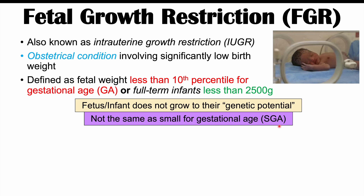Fetal growth restriction is not the same as small for gestational age. In FGR, the fetus or infant is not meeting their genetic growth potential — there is some underlying cause impairing their ability to grow. Some infants are constitutionally small, and that is normal for them. In FGR, the fetus is small because of some other identifiable or unknown cause, which we'll discuss next.